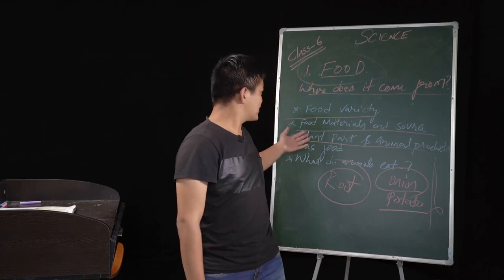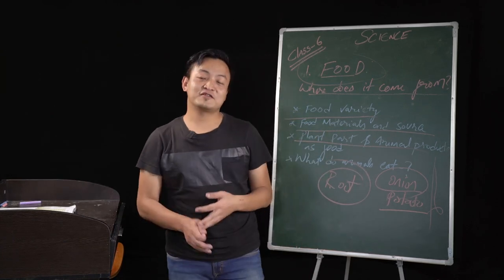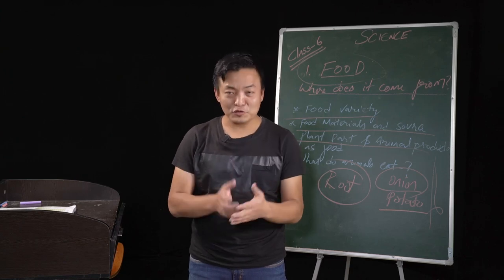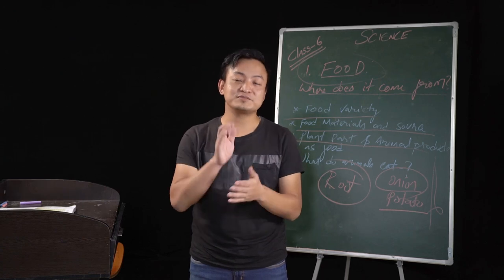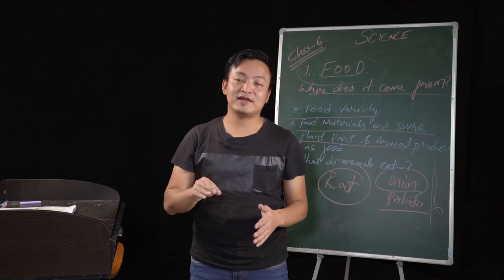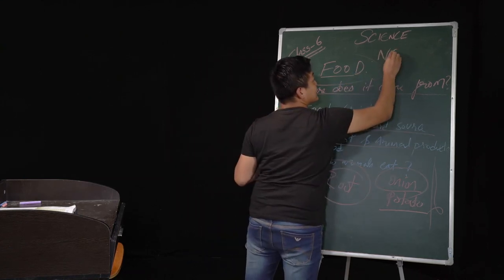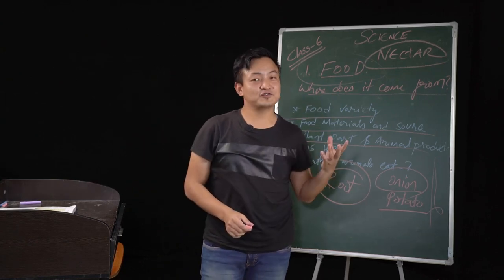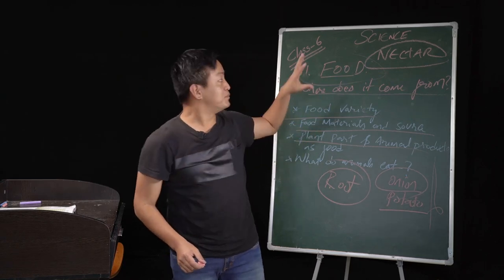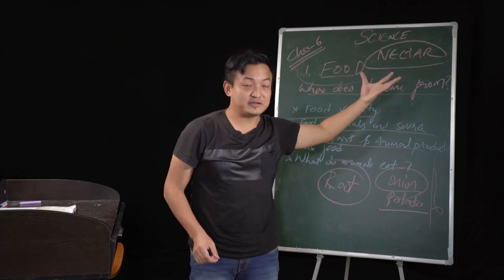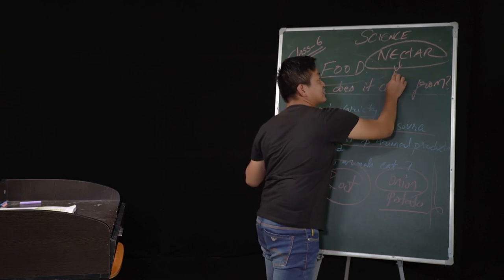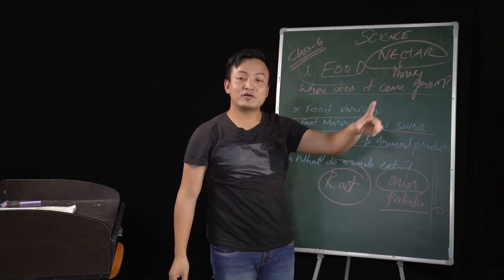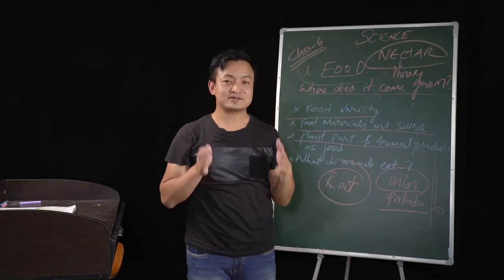Now the important one — honey. Honey gives us lots of health benefits. So how is honey produced? We all know we get it from bees. How does a bee prepare this honey? Bees collect the nectar. What is this nectar? It's a sweet juice. Bees collect this nectar from flowers, and then they convert this sweet juice into honey — they convert the nectar into honey and store it in a beehive. That's how, in very short, honey is prepared.